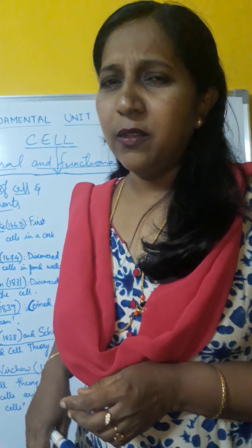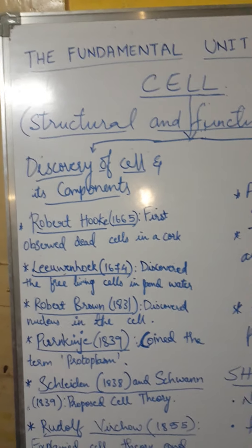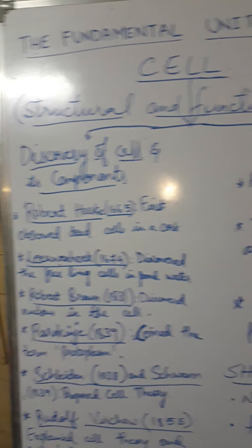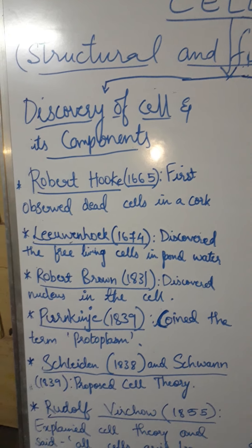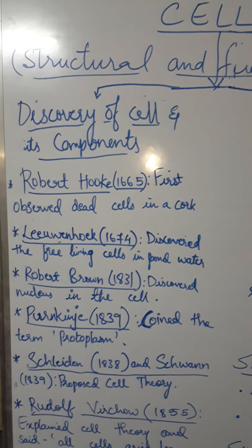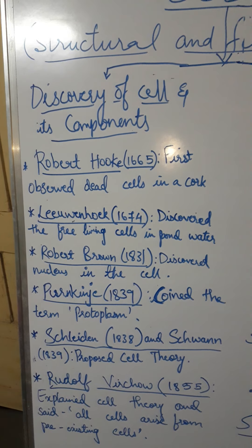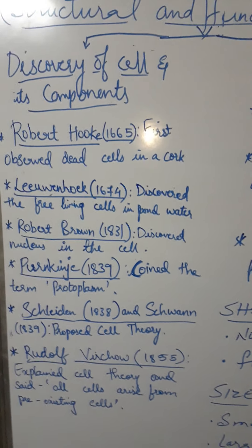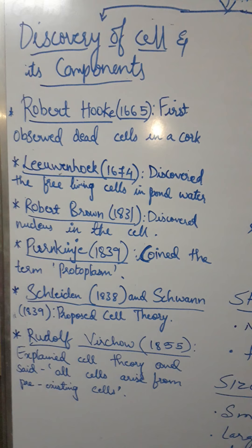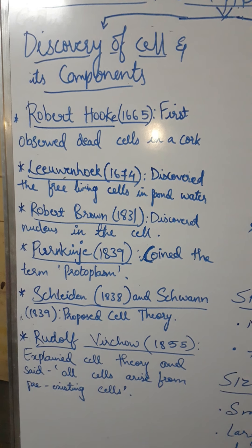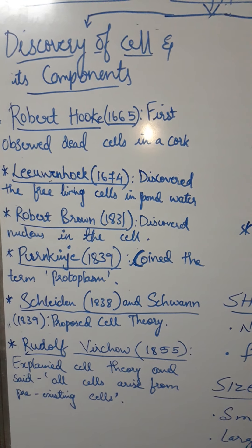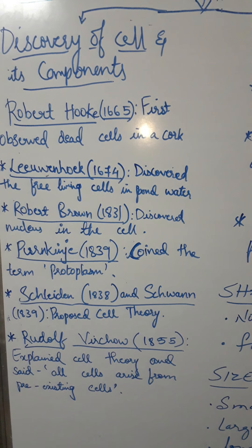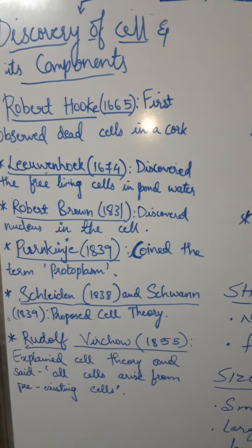Let us see how different theories were given by different scientists. Robert Hooke in the year 1665 first observed dead cells in cork. And in 1674, Leeuwenhoek discovered free living cells in pond water. And in 1831, Robert Brown discovered the nucleus in the cell. Nucleus is an important part of the cell — it is the brain of the cell and plays a major role, performing many important functions, which we are going to study afterwards.